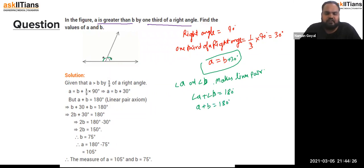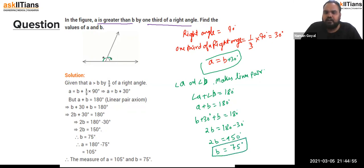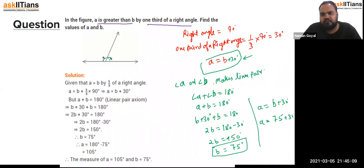Substituting A = B + 30° into A + B = 180°: (B + 30) + B = 180, so 2B = 150, giving B = 75°. Then A = 75 + 30 = 105°. So the value of A is 105° and B is 75°.